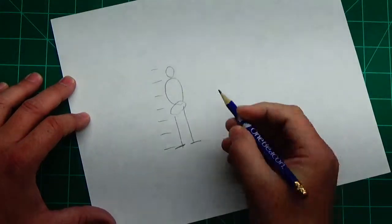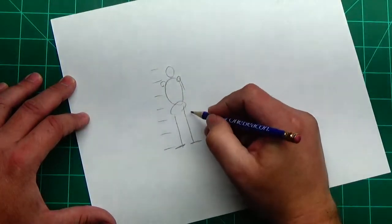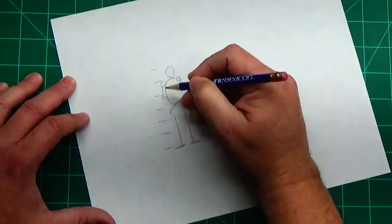So your feet are going to be here and here. Shoulders are going to be here and there. Hands usually come down to about right here, so you've got an elbow joint and a hand. And these are your measurements.